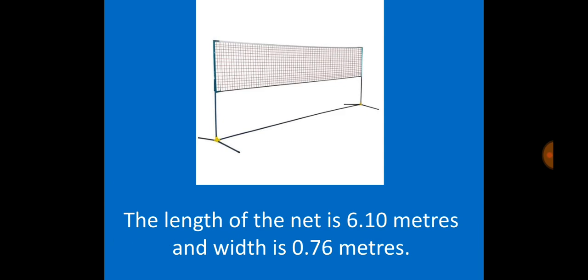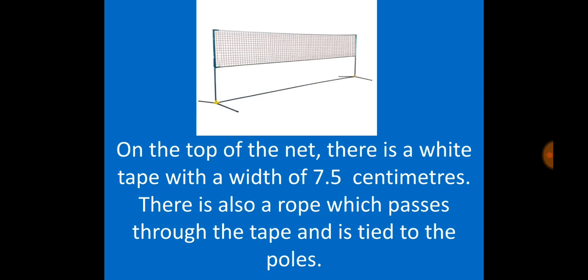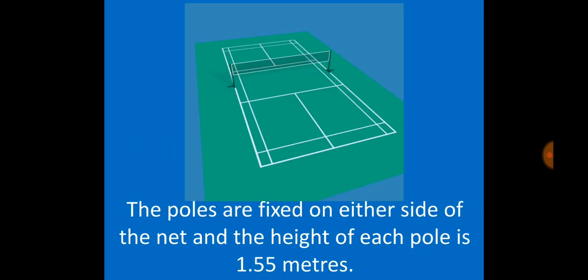The length of the net is 6.10 meters and the width is 0.76 meters. The height of the net is 1.55 meters at the corners and 1.52 meters at the center of the court. On top of the net there is a white tape with a width of 7.5 centimeters, and a rope passes through the tape and is tied to the poles.